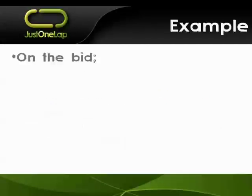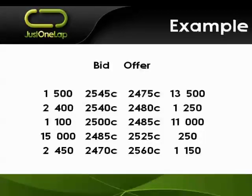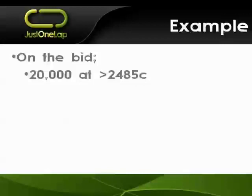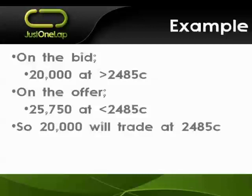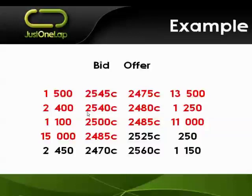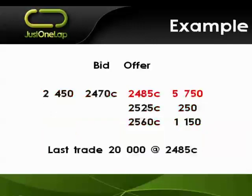Going back to where we're sitting: on the bid side we've got 20,000 shares on purchase at 24.85 or more. On the sell side we've got 25,750 shares on market at 24.85 or lower. So 24.85 is the magic number — 20,000 shares trade. A bunch of buyers actually got to buy cheaper than they wanted, and some sellers got to sell at a better price than they offered. The last trade shows 20,000 shares at 24.85.